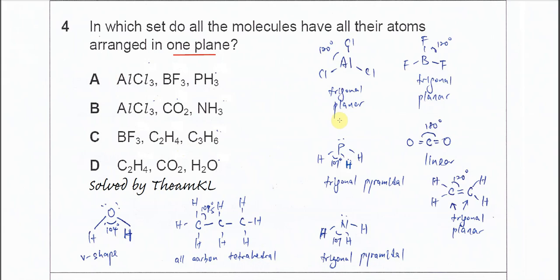Aluminium chloride (AlCl₃) has three bonding pairs, so it's trigonal planar with a bond angle of 120 degrees. This means all the aluminium and chlorine atoms are in the same plane.